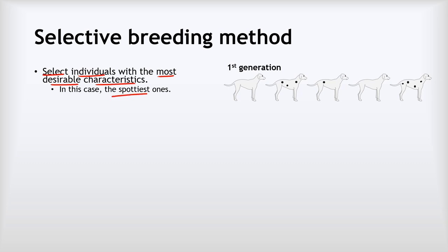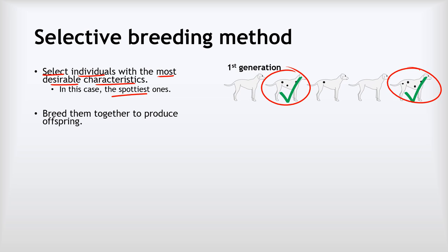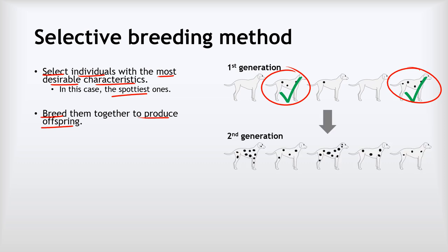We can see there's a range of spottiness from completely unspotty to fairly spotty. Our two spottiest dogs are selected and allowed to breed together to produce offspring. The reason the spotty dogs were spotty is because they had the genes for spottiness. When they breed together, they pass those spottiness genes onto their offspring, and some might get even more of those genes. We select again the ones that are spottiest — we don't want to breed the unspotty ones.